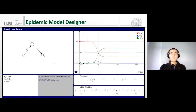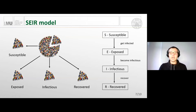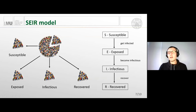Moving on to the SEIR model — very similar to SIR with one change: we add a fourth compartment, E for exposed, to simulate the incubation period. When you contract the disease, you no longer move directly to infectious; first you become exposed — infected but not yet infectious. After the incubation period you then become infectious. So the state sequence is S → E → I → R.